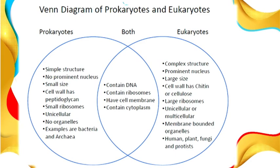Both cell types contain ribosomes, which are necessary for cell replication — that is for meiosis and mitosis. They both have a cell membrane and cytoplasm, which is the jelly-like structure where organelles are found. Eukaryotic cells have a complex structure with a prominent nucleus, meaning the DNA is enclosed within a nuclear membrane rather than lying freely in the cytoplasm. Eukaryotic cell walls either have chitin or cellulose; plant cells have cellulose cell walls. They have larger ribosomes and are either unicellular or multicellular, with membrane-bound organelles. Examples include humans, plants, and fungi.